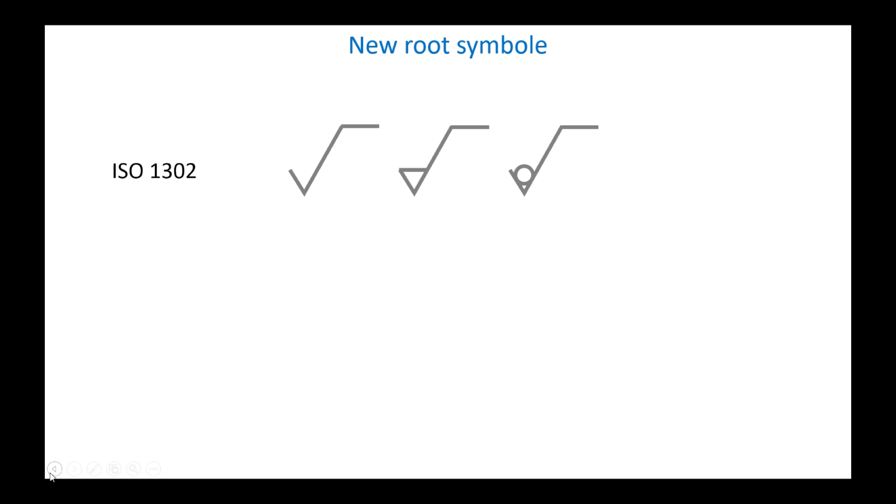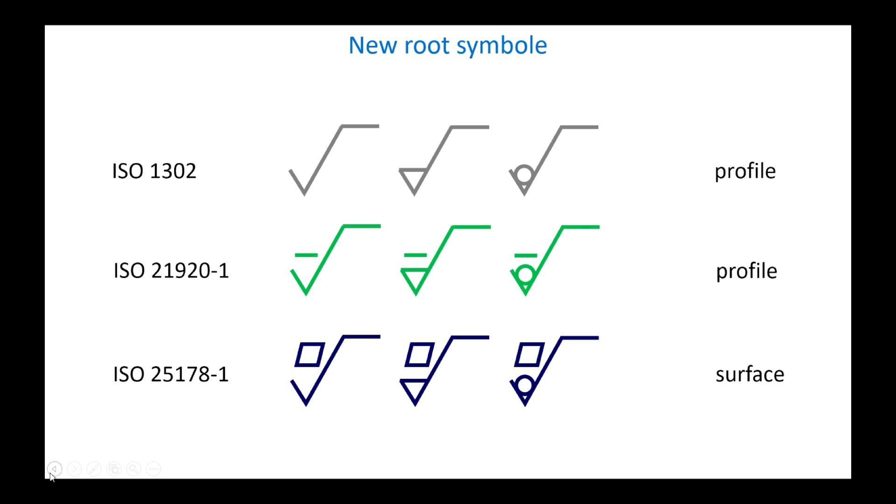This is what was done in ISO 21920-1, with the definition of a symbol slightly modified by the addition of a horizontal line above the triangle to symbolize a profile. A similar modification was introduced in the surface standard ISO 25178-1, with a symbol representing a surface. Depending on the symbol used, we therefore know which standard to refer to for the interpretation of tolerances.